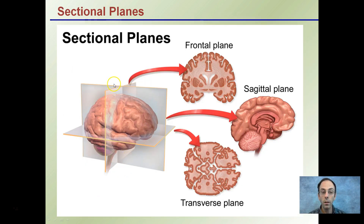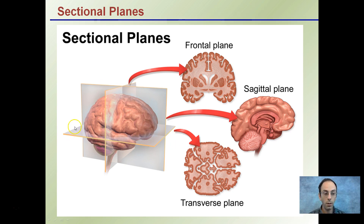Looking at the brain in three different planes, we have the frontal plane, represented by this plane right here. The sagittal plane divides it right down the center, and then our transverse plane shows how the brain might look in cross-section. These are some of our sectional planes, and you should be familiar with these not just in the brain, but in any sort of specimen in general, because they all hold true.